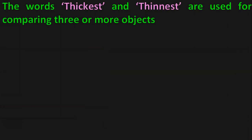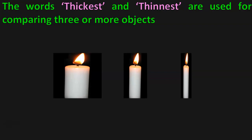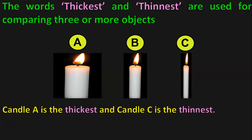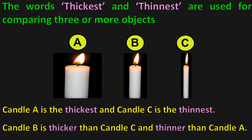The words Thickest and Thinnest are used for comparing three or more objects. Let us take three candles now and name them A, B and C. Which is the Thickest candle of the three? Candle A is the Thickest because it has a Very Wide Width. And Candle C is the Thinnest. Candle B is Thicker than Candle C and Thinner than Candle A. So the terms we learnt here are Thick and Thin.